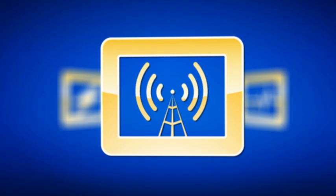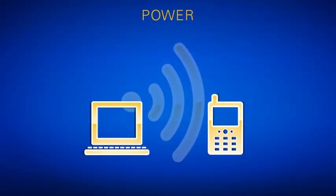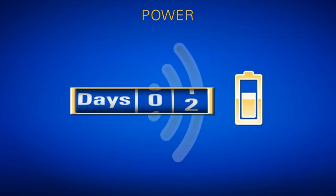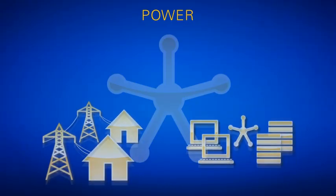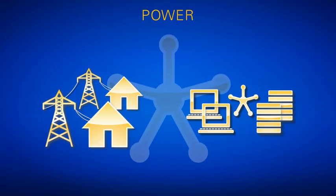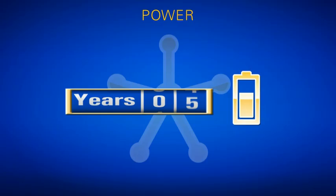The first characteristic to consider when choosing which wireless technology is best for your application is power. 802.11 devices, such as cell phones or laptops, typically have a battery lifetime of one to two days. 802.15.4 wireless technology, commonly used in smart grids and wireless measurement systems, can have a battery lifetime as high as three to five years.